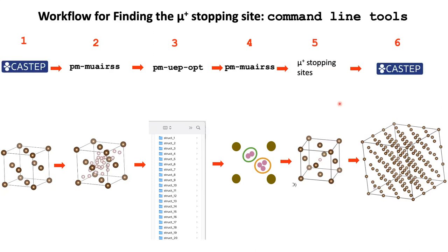If you want to run the method using its command line version, you first run the corresponding density functional theory simulation using the CASTEP code. This is normally done on a computer cluster, and we can provide access to the SCARF cluster of the Scientific Computing Department to users of the muon source. Once you have that, you sequentially apply a series of commands to obtain the potential stopping sites and then relax the final structure to estimate the lattice distortions in a supercomputer. Each of these commands is applied using certain parameters I will describe in the context of muon Galaxy.